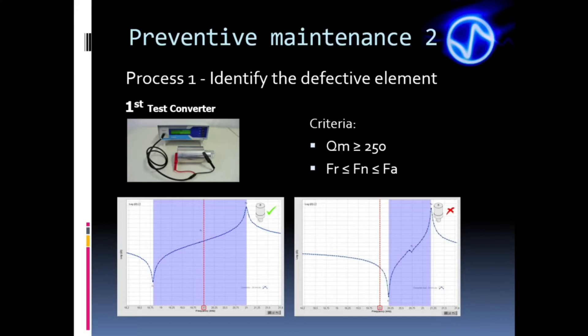In short, the basic evaluation criteria for converters analyzed with TRZ are: 1. Must have a QM greater than 250; 2. The nominal frequency must be between FR and FA. Be aware that these criteria are basic. If they are not met, the converter certainly will not work well. However, they may be not enough. Meeting these criteria is a necessary but not sufficient condition. We must follow the manufacturer's criteria when available. If the supplier does not indicate the range and tolerance, we recommend the study and creation of more refined criteria by the user.